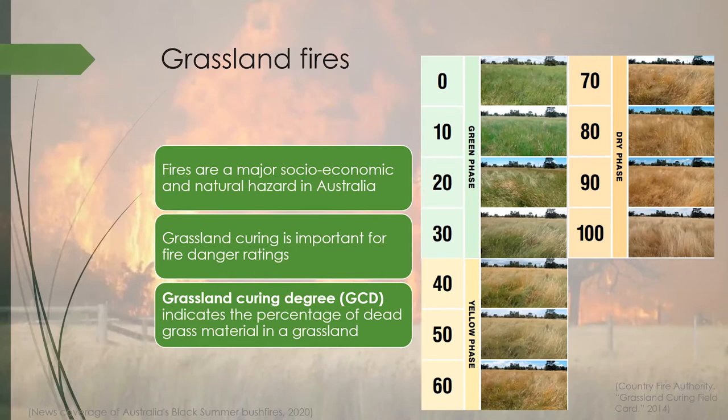So what is grassland curing? It is defined as the progressive senescence and drying out of grass, leaving dead materials behind. Grassland curing degree is measured by the percentage of dead grass material in the grassland. From the image on the right, it would be 0% cured if grass is completely green and 100% cured if it's completely dried.